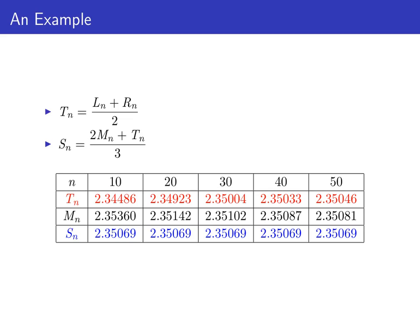So here we can see the trapezoid sums using the average of the left and right sums, and the Simpson's sums using this weighted average of the middle sums and the trapezoid sums. One thing to note about the Simpson's sums is that they all agree to five decimal places.